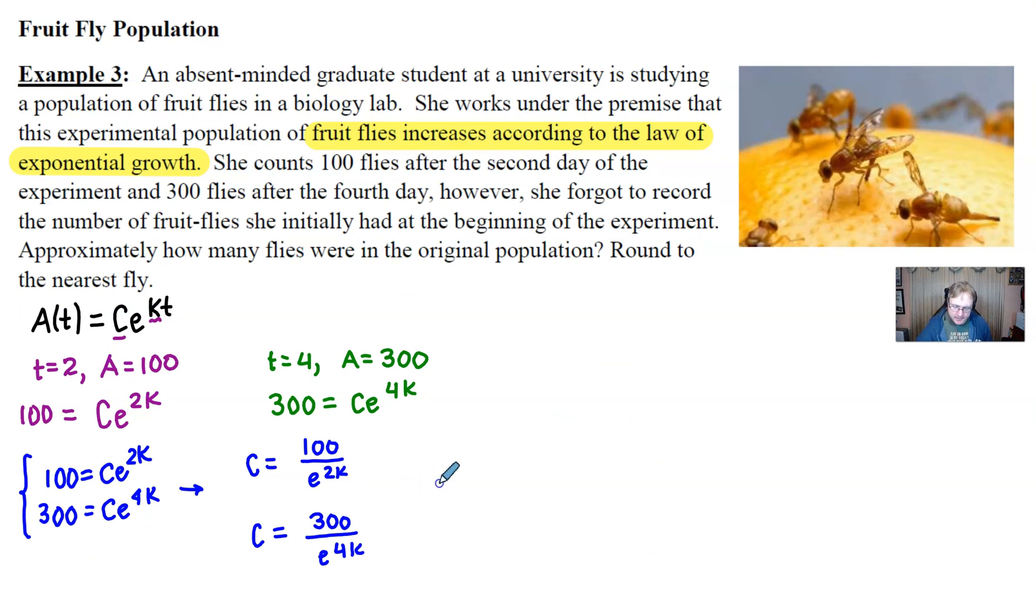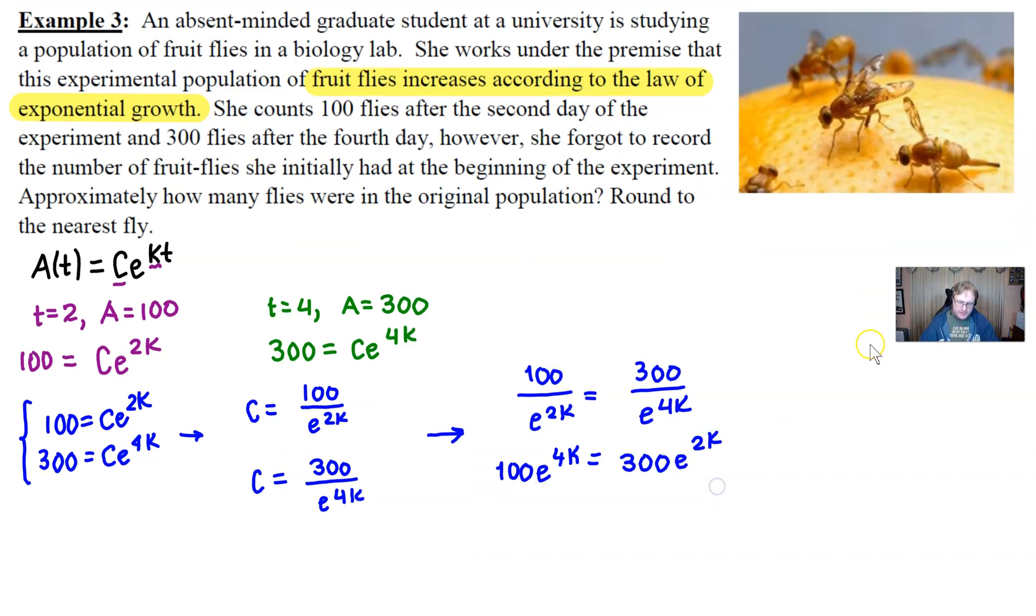So from here, we are then going to go ahead and set these two c's equivalent to one another. And so we would have an equation that looks a little bit like this. We're going to have to cross multiply, it looks like. So 100 times e^(4k) would equal 300 times e^(2k). And at this point, we could divide both sides by 100